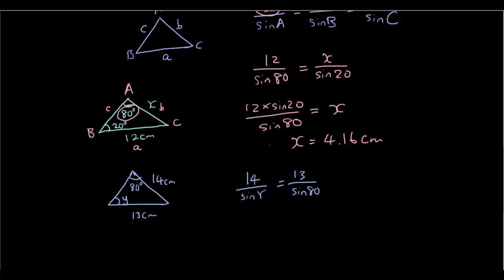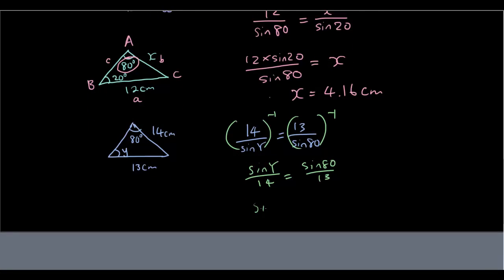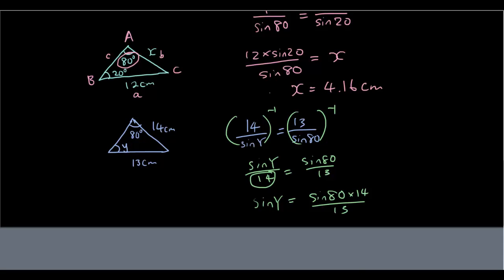So rearranging this, I'm going to take the reciprocal of both sides, which means I'm going to raise both sides to the power of negative 1, which will turn both sides upside down. So sine y over 14 equals sine 80 over 13. And then I'm going to multiply by 14 on both sides. So I have sine 80 times 14 over 13 equals sine y.